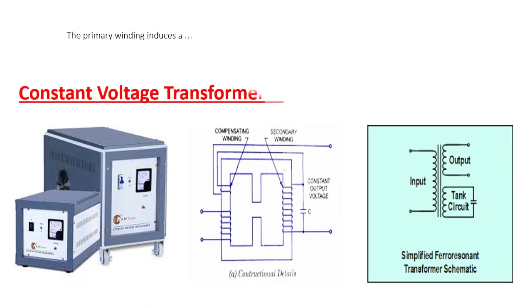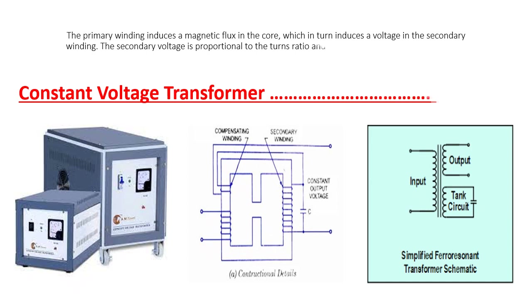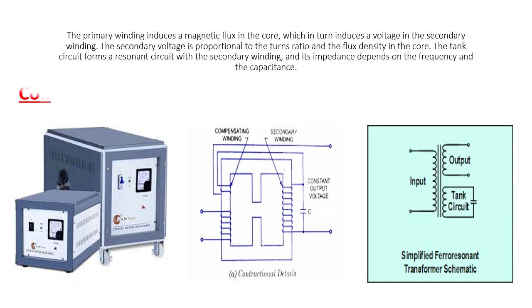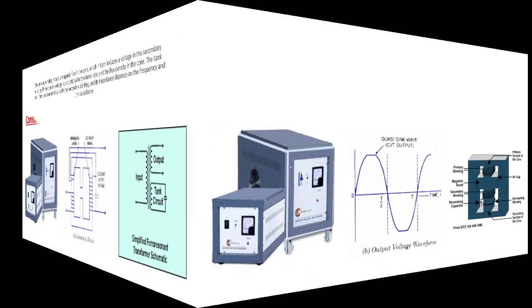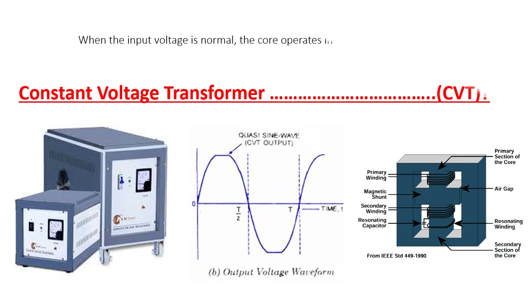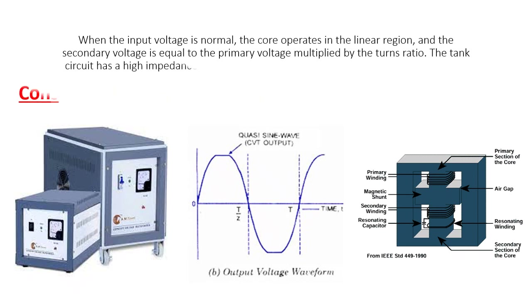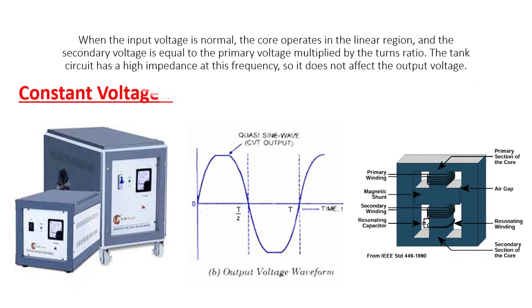The primary winding induces a magnetic flux in the core, which in turn induces a voltage in the secondary winding. The secondary voltage is proportional to the turns ratio and the flux density in the core. The tank circuit forms a resonant circuit with the secondary winding, and its impedance depends on the frequency and the capacitance. When the input voltage is normal, the core operates in the linear region, and the secondary voltage equals the primary voltage multiplied by the turns ratio. The tank circuit has a high impedance at this frequency.